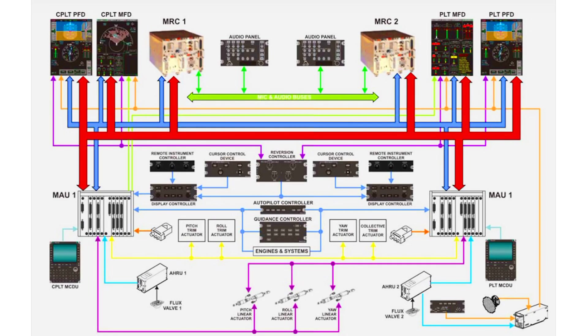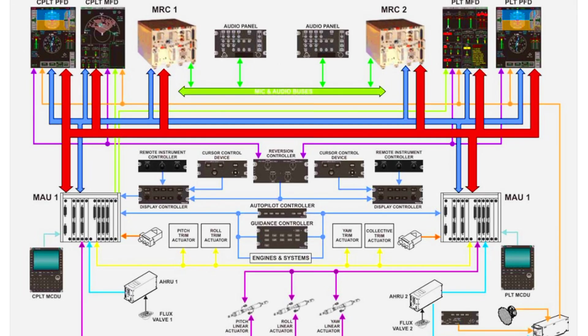This is the general diagram of the AFCS and its components installed in the AgustaWestland AW-139 helicopter. It includes MAU 1 and 2, and MRC 1 and 2.